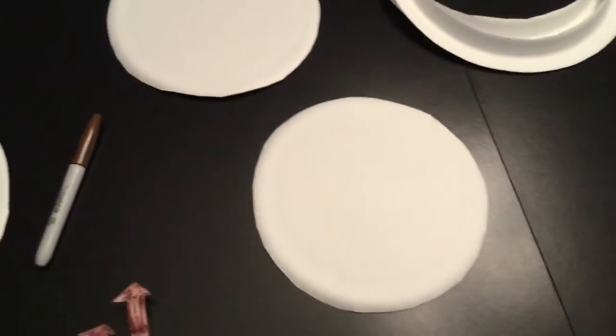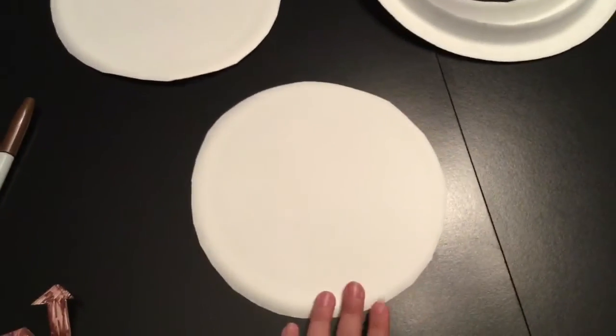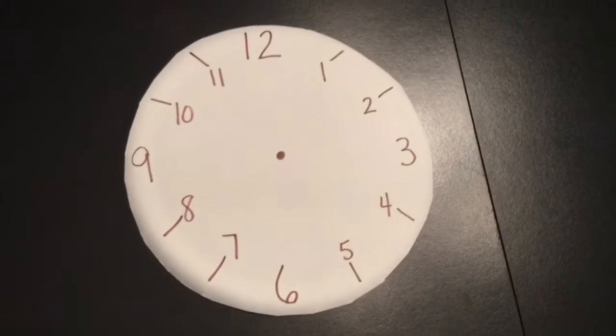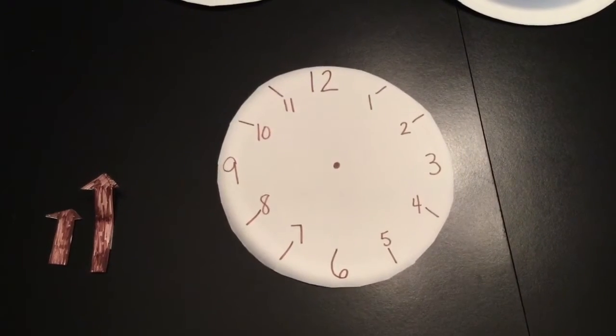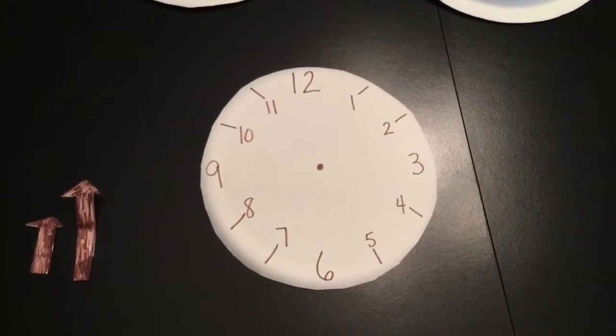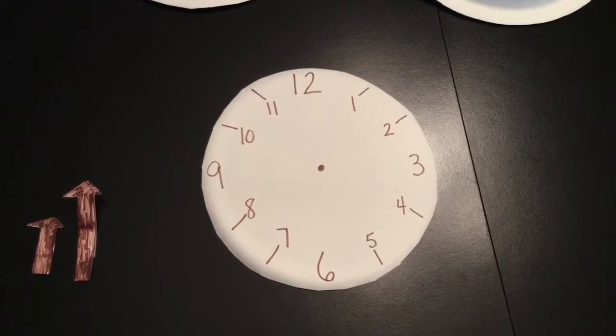One plate or piece of paper you're going to write the numbers. I drew my numbers with a dot in the middle so I know where to put my two arrows.